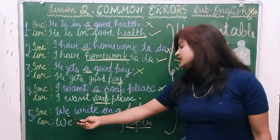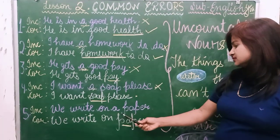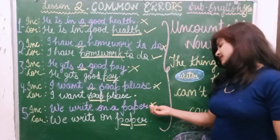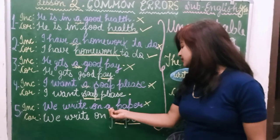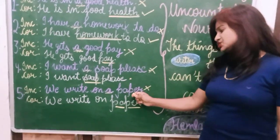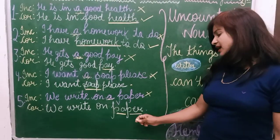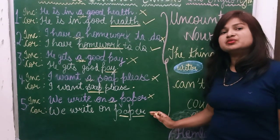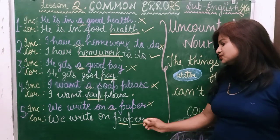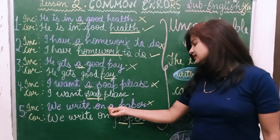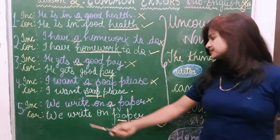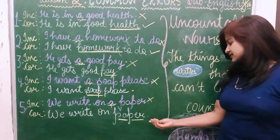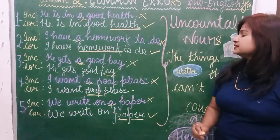Incorrect: 'We write on a paper.' It is incorrect. The reason is that Paper is also an Uncountable Noun, so we do not use article 'A' before it. The correct sentence is: 'We write on paper.' That is the right and correct sentence.